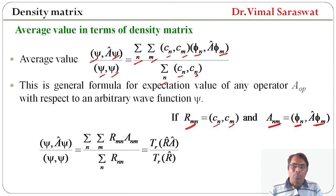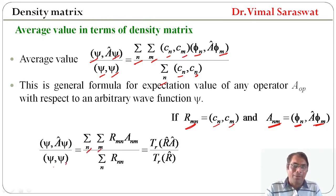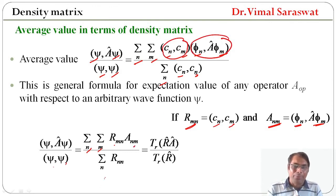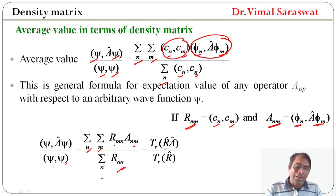Then <psi | A | psi> divided by <psi | psi> equals sigma_n sigma_m r_mn times A_mn divided by sigma_n r_mn, and this equals trace of (r A) divided by trace of r.